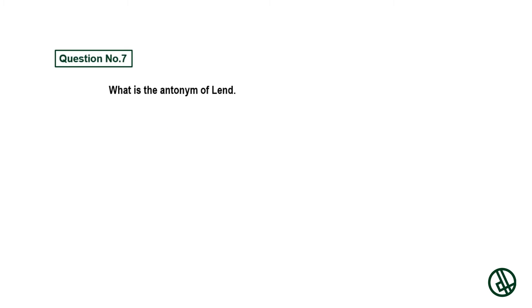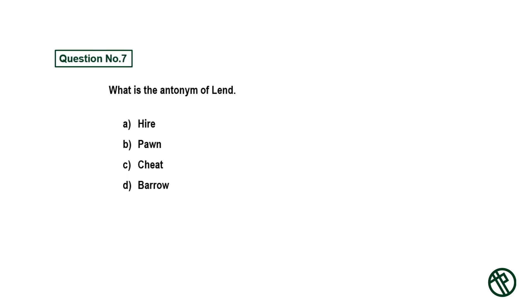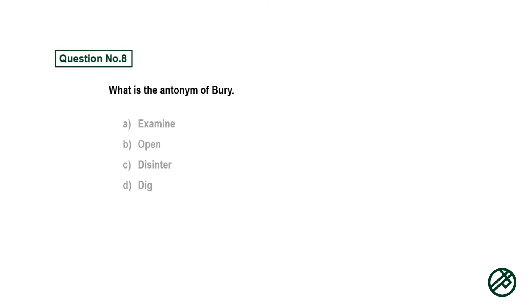Question number seven: What is the antonym of 'lend'? Option A: hire. Option B: pawn. Option C: cheat. Option D: borrow. Answer is option D: borrow.